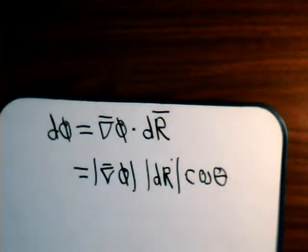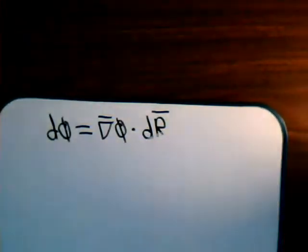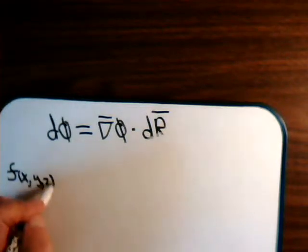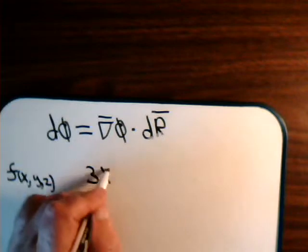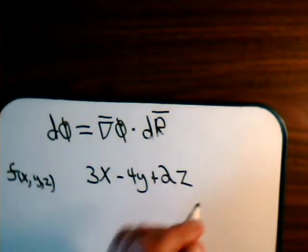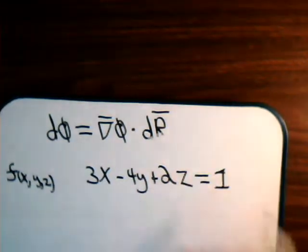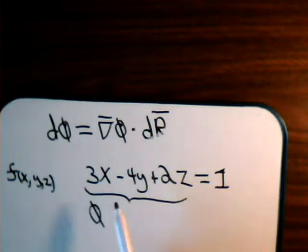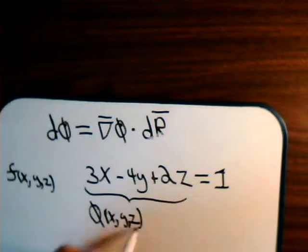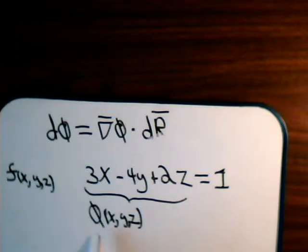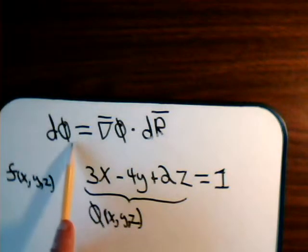In this video, we want to consider a three-dimensional case. Say we have a function of x, y, and z. Maybe our function is something like 3x minus 4y plus 2z equal to some constant, say this equals 1. So now this is our scalar, obviously a function of x, y, and z. When this is equal to a constant, it defines some three-dimensional surface. On that three-dimensional surface, the scalar is equal to a constant, so its differential is going to be zero.